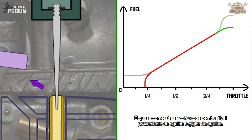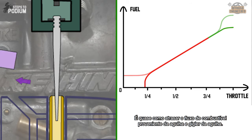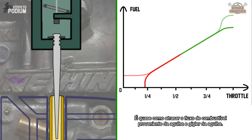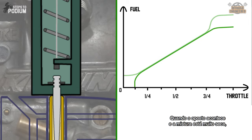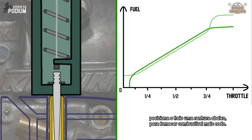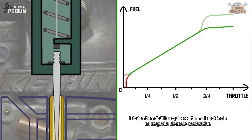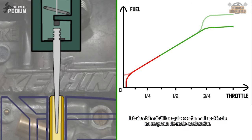You can look at it as delaying the fuel flow from the needle and needle jet. When the opposite happens and the mixture is too lean, place the circlip a groove lower to make the mixture richer sooner on the mid throttle response. This can be useful if you want more power on mid throttle applications.